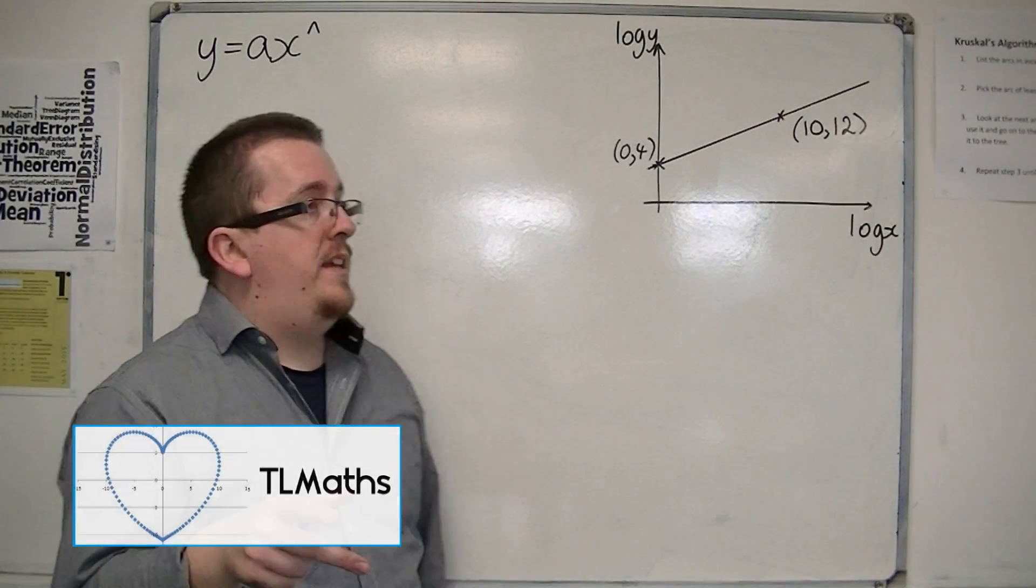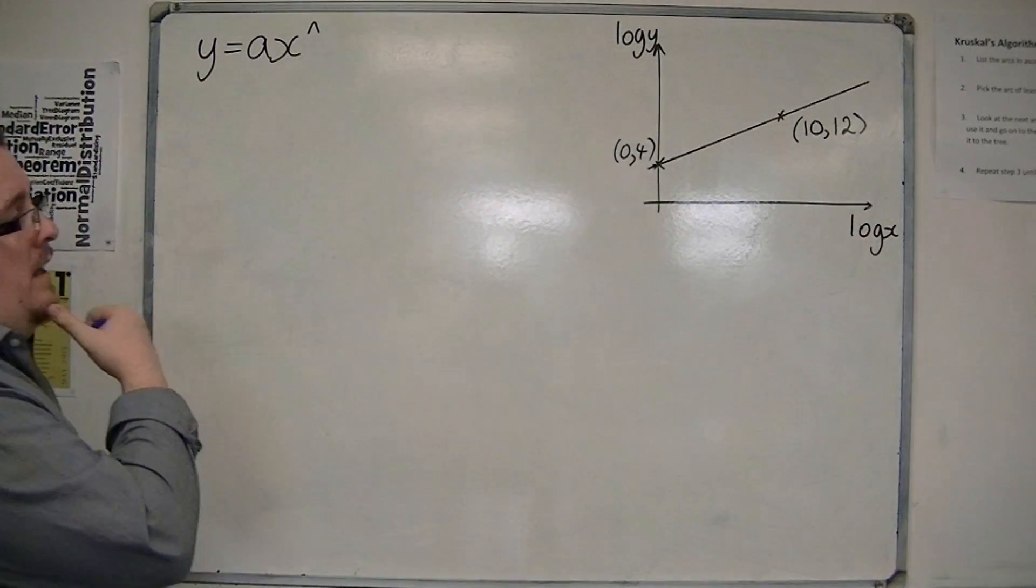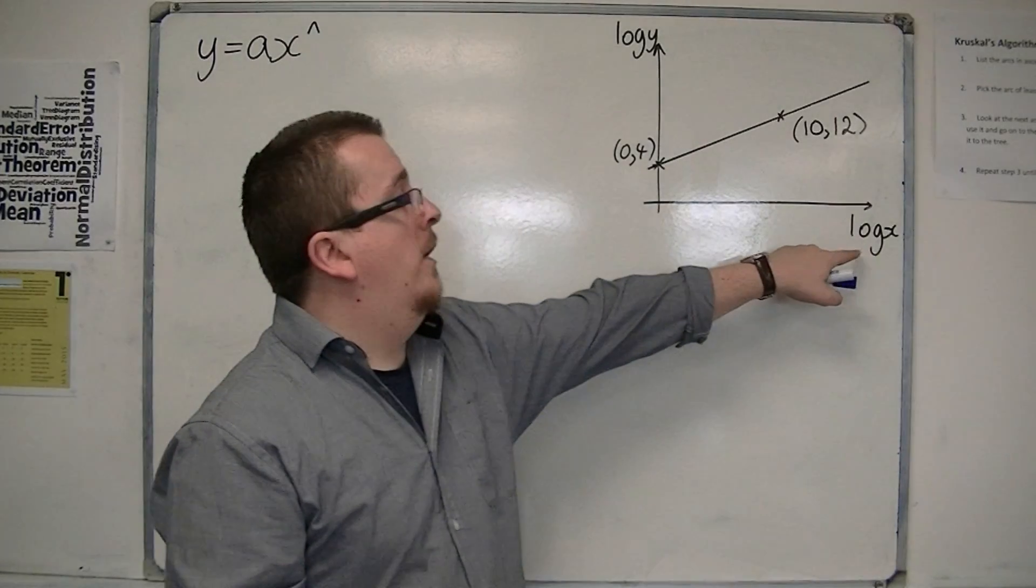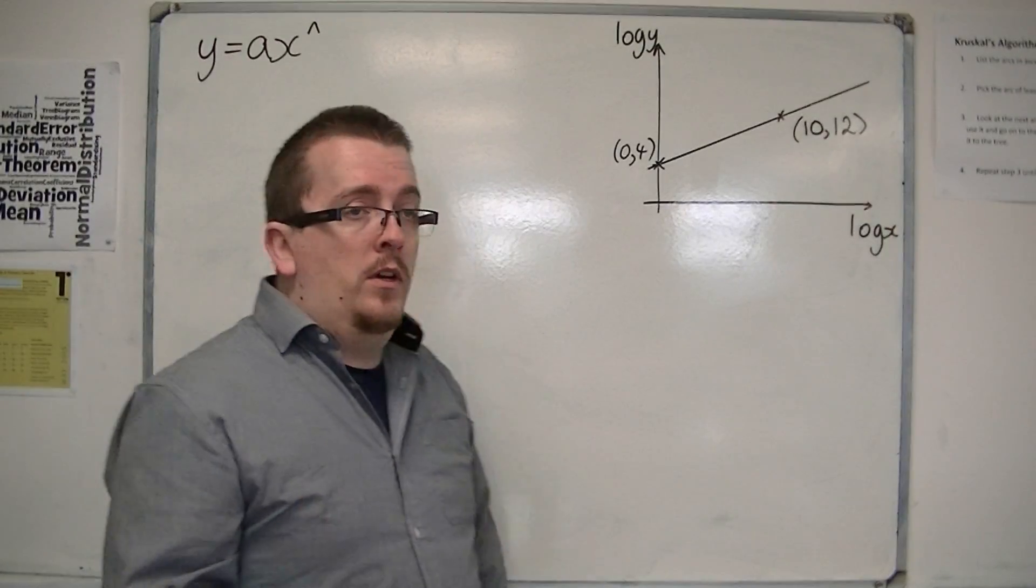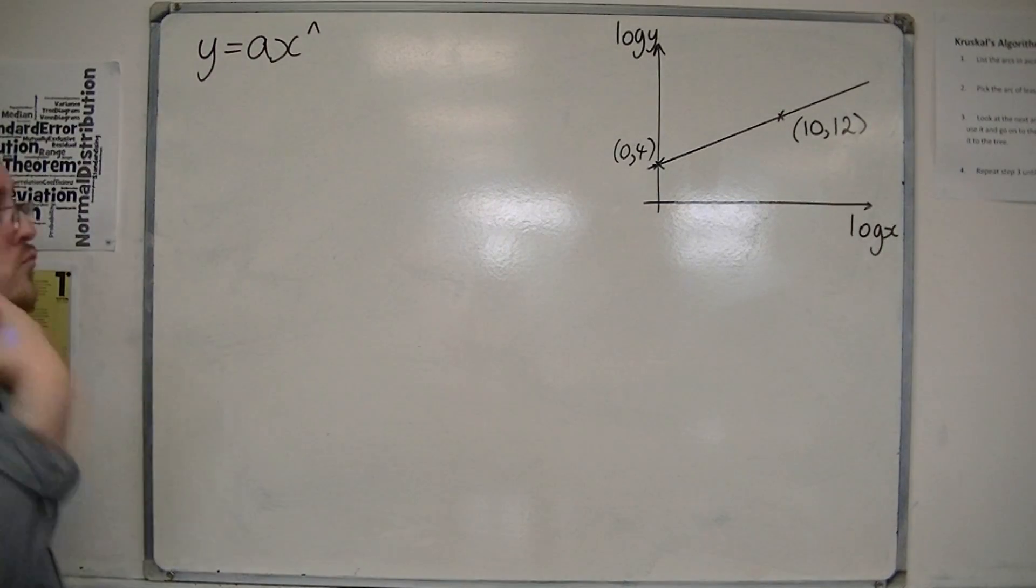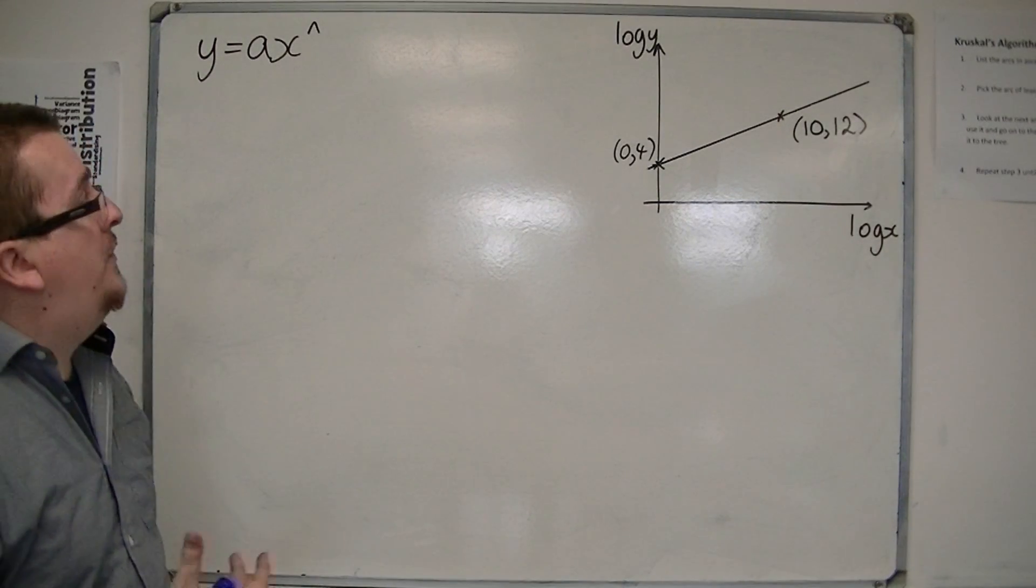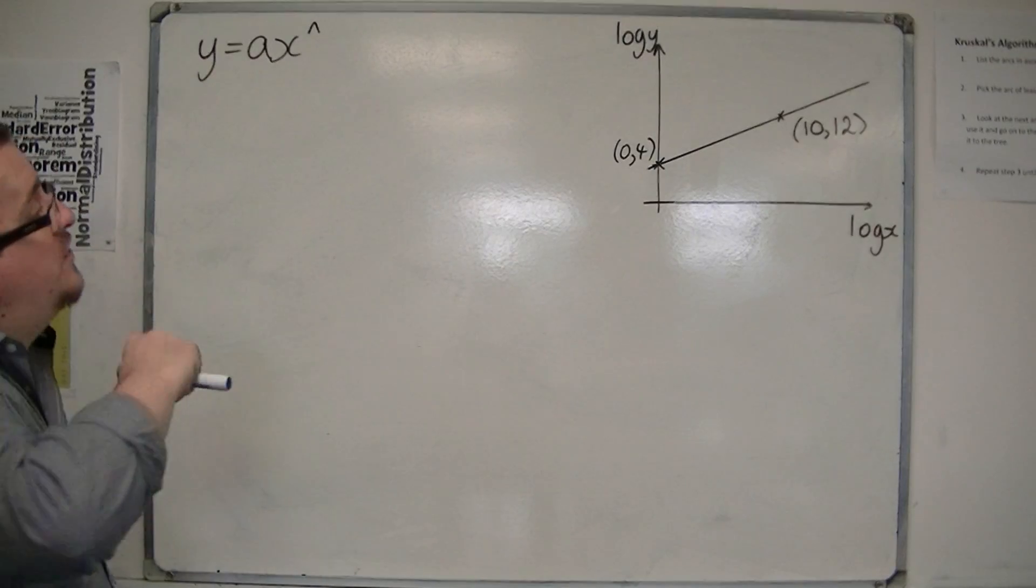Following on from the previous video, let's say I've got a graph where I've got log x against log y, and I've got two points on the line, and I want to write this in the form of y equals ax to the n.